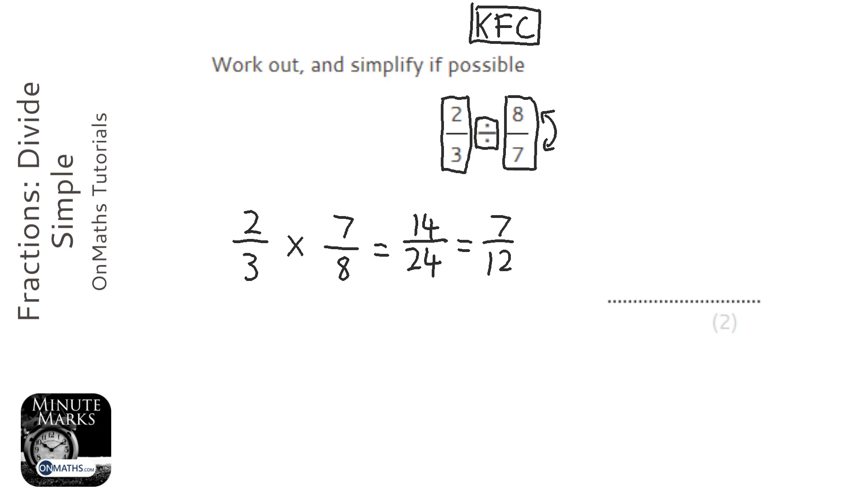Something I could have done is cancel it here and just divide anything at the top and anything at the bottom by the same number, so that could be 1 and 4. So it would be 1 times 7 which is 7, 3 times 4 which is 12. So my answer is 7 over 12.